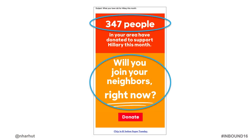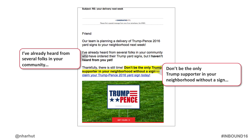How do we use it in email marketing? Hillary Clinton's campaign said '347 people in my area have donated' — not in my state, not in the nation, not in the party, but in my area. The Trump campaign also used social proof: 'I've already heard from several folks in your community — don't be the only supporter in your neighborhood without a sign.' Heavy social proof in both cases.